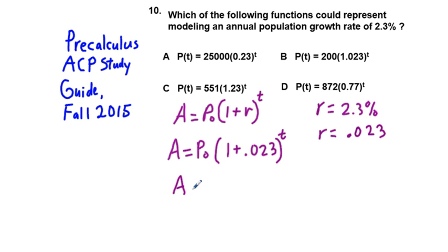So that's going to be A equals P sub zero times 1.023 to the power of T. And the only one where that will work is that's your choice B.